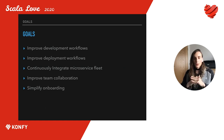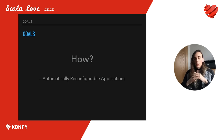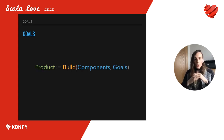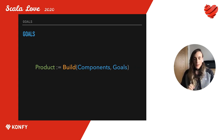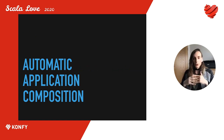Our goals were to improve development and deployment workflows, start continuously integrating the entire microservice fleet, and improve team collaboration and simplify working together. The key idea was to merge the many components of the product into a single highly reconfigurable application. We wanted to make the integration process more declarative and let engineers define their product as a set of components and goals, making all the wiring completely configurable and automated. We call this automatic application composition.